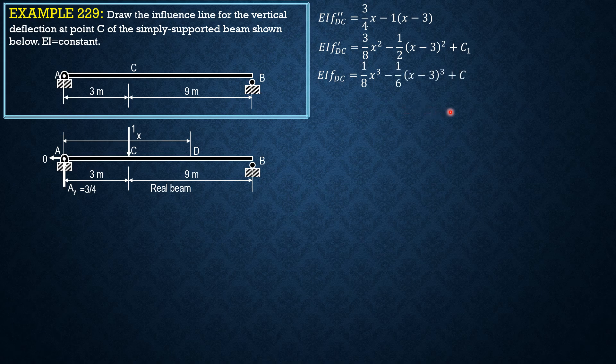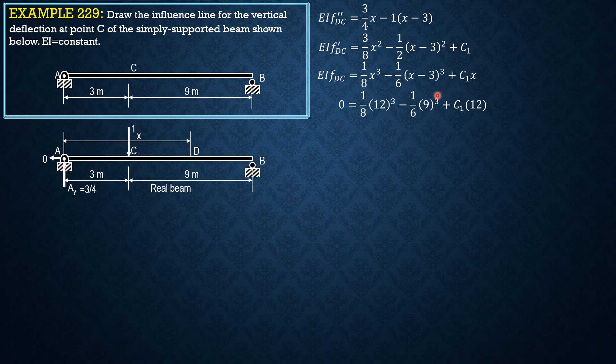Let's evaluate C sub 1 by setting X equals 12, Y F DC is 0. So 0 equals 1 eighth of 12 cube minus 1 sixth of 9 cube plus C sub 1 times 12. 12 minus 3 is 9, so C sub 1 equals negative 63 over 8.